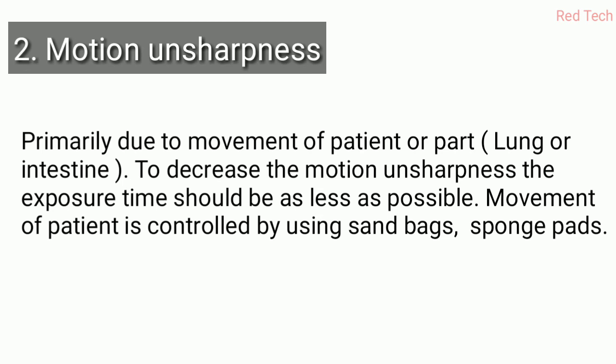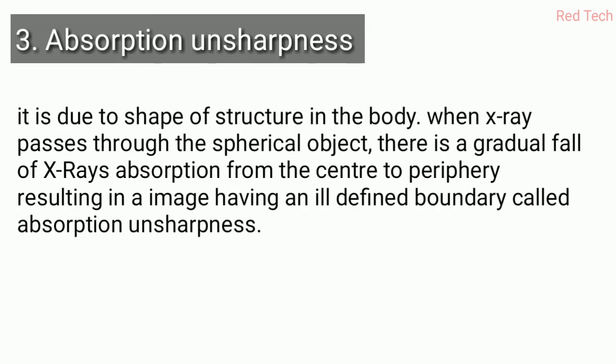Absorption unsharpness is due to the shape of the body structure. When x-rays pass through a spherical object, there is a gradual fall in x-ray absorption from the center to the periphery, resulting in an ill-defined boundary. In some body parts absorption is high, and in others it is low, which creates unsharpness in the radiographic image.